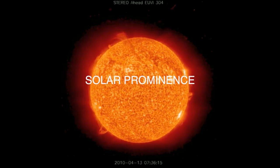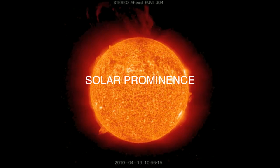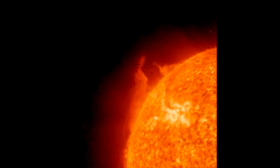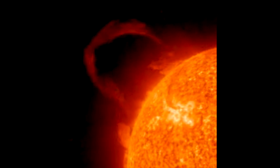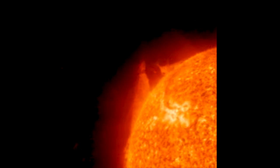A solar prominence, also known as a filament when viewed against the solar disk, is a large, bright feature extending outward from the sun's surface.